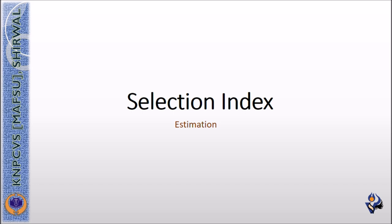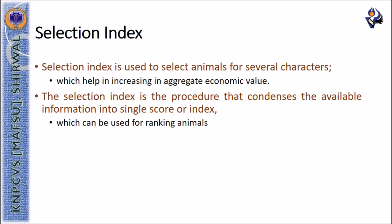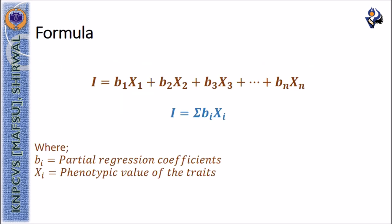Hello and welcome to the class on selection index. Selection index is used to select animals for several characters which help in increasing the aggregate economic value. The selection index is the procedure that condenses the available information into a single score or single index value. The formula for finding out the index value is b1x1 plus b2x2